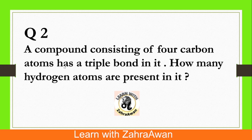Question number 2: A compound consists of 4 carbon atoms and has a triple bond in it. How many hydrogen atoms are present in it? We have an organic compound with a total of 4 carbon atoms and a carbon-carbon triple bond present. The question asks for the number of hydrogen atoms in this organic compound.